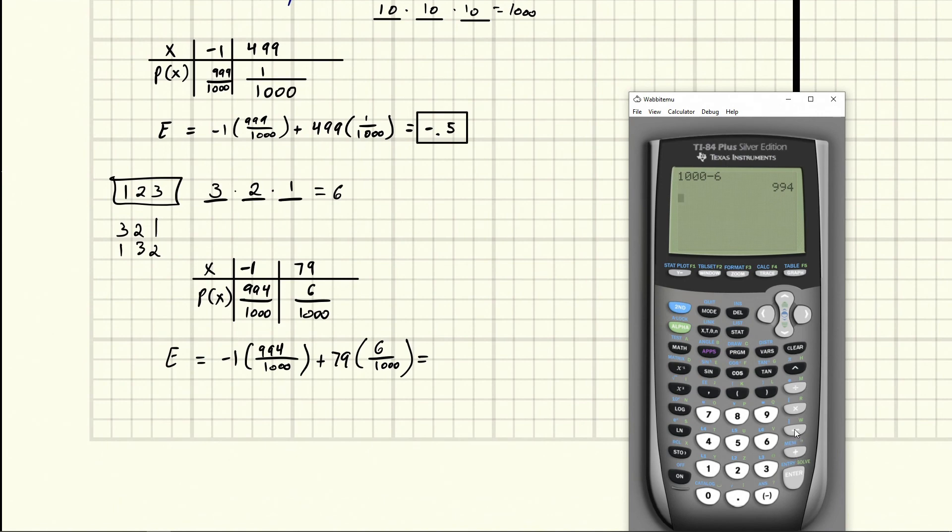So we're going to do negative one times, and we're going to do a fraction here. I had for a split second, I forgot how to type a fraction. Okay, so there we go, you hit the green key and then F1. And so we've got 994 over 1000 plus 79 times six over 1000. That's going to give us negative 13 over 25, we're going to convert this to a decimal, you hit math, go to decimal, and enter, we get negative 0.52.